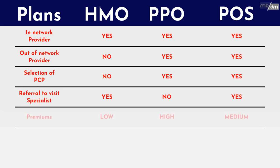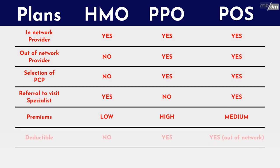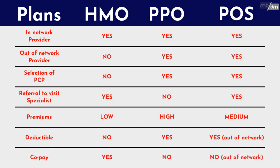With less advantages, HMO has a low premium cost. In POS plans, deductibles are applied if claims are processed at the out-of-network level. In POS plans, copay is not applied to out-of-network claims.